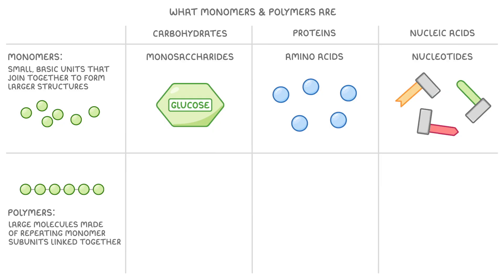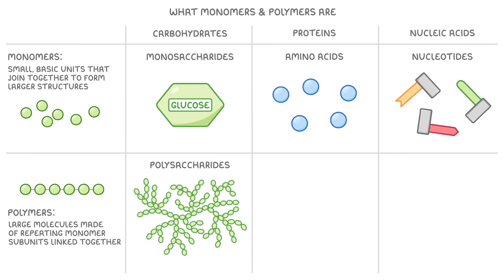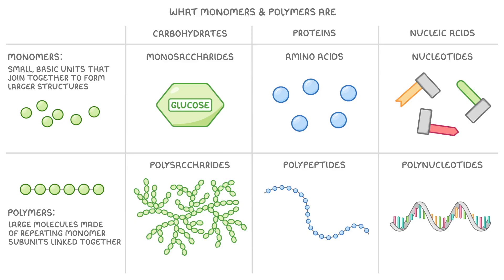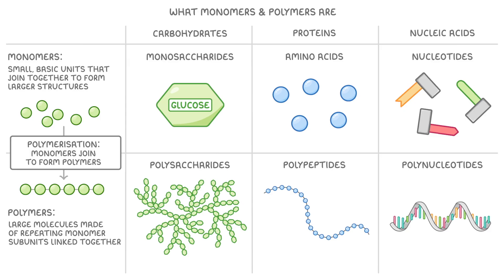Polymers, on the other hand, are large molecules made up of many repeating monomer subunits all linked together. For carbohydrates, the polymers are called polysaccharides, and a good example is glycogen, which is made up of loads of glucose monomers all bonded together. For proteins, the polymers are called polypeptides, and these are formed from a huge number of amino acid monomers all bonded together. And then finally, for nucleic acids, the polymers are called polynucleotides — an example here is DNA, where each strand is a very long chain of nucleotide monomers. Polymerisation is the process where monomers join to form polymers, and this is how we create the large, complex molecules that are so essential for life.